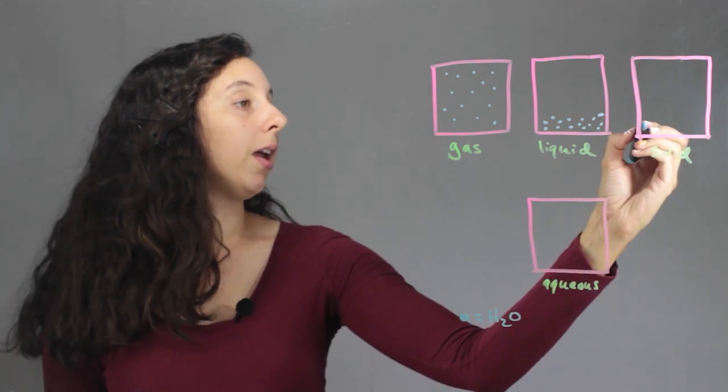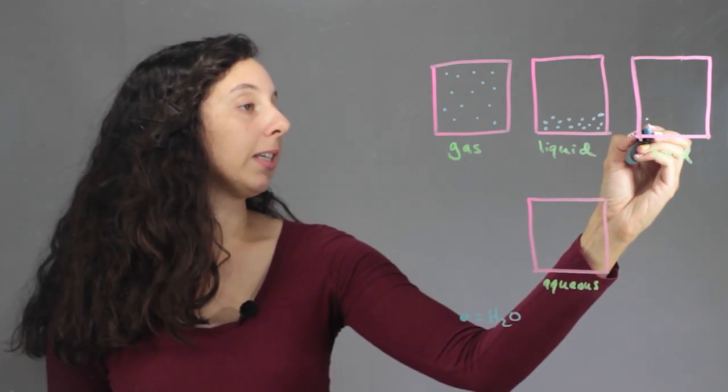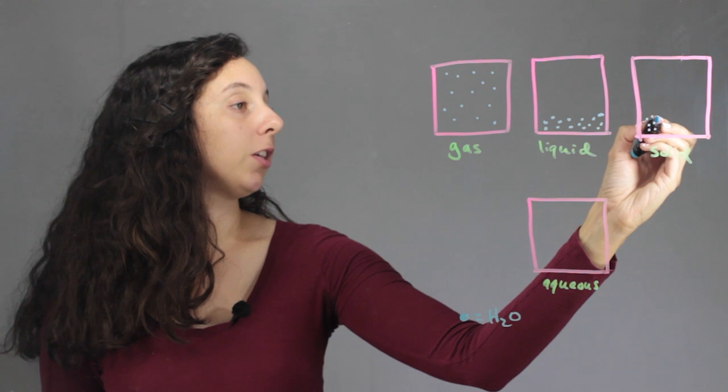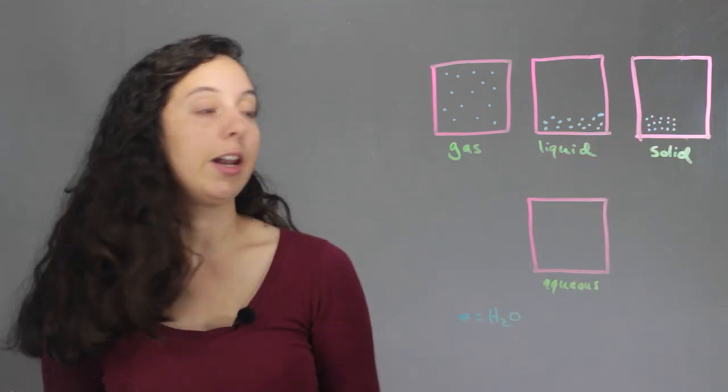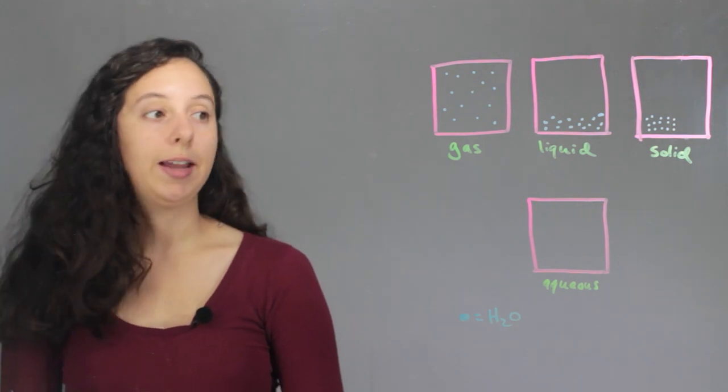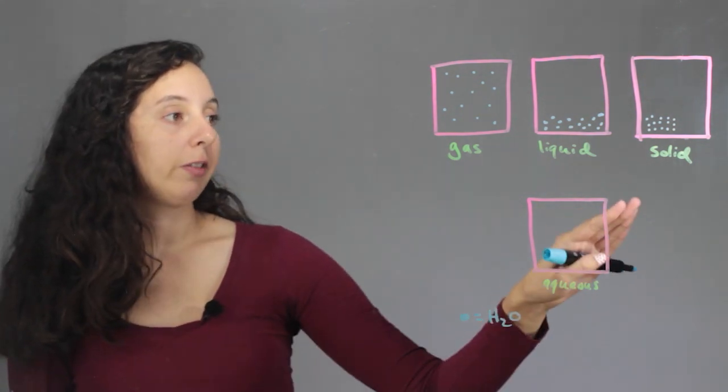And solid is everything lined up nicely in a grid, so like an ice cube. And it won't form the shape of the container. So now we have our three states of matter.